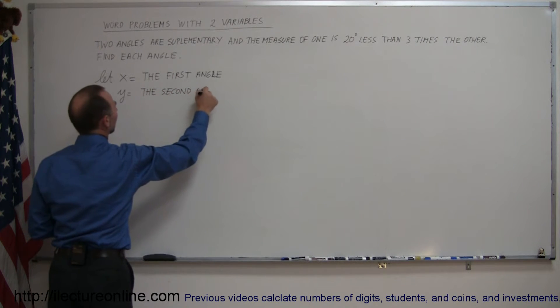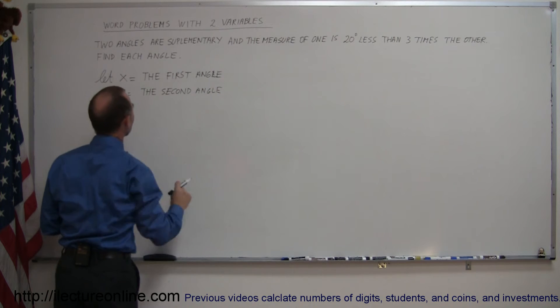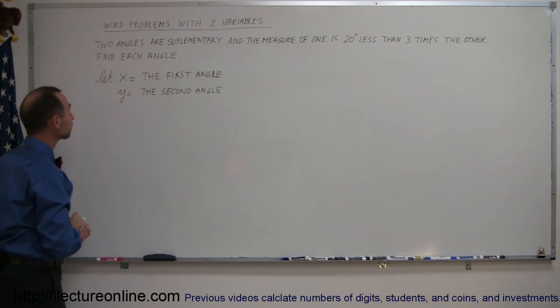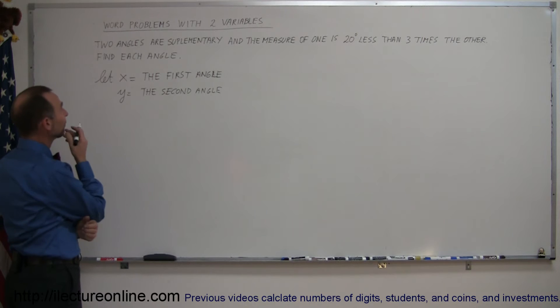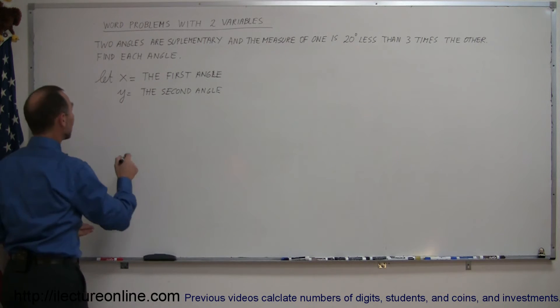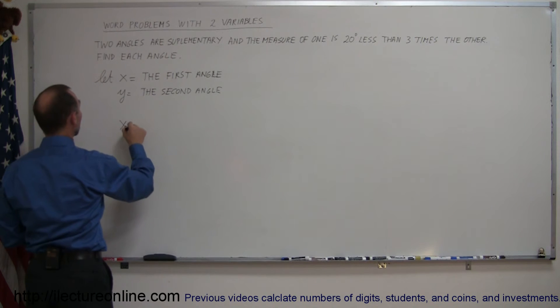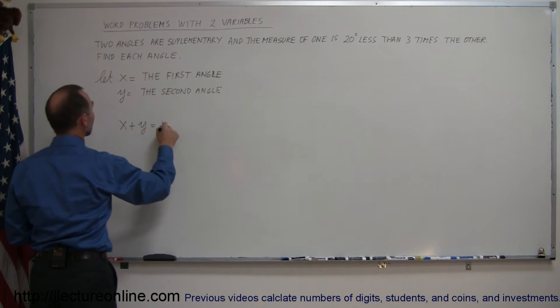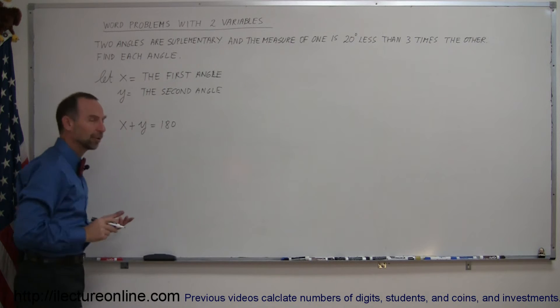You may say, well, why do I even bother writing that? Let me tell you, it's a good thing to do that. All right. So, if the two angles are supplementary, that means that they must add up to 180 degrees. That means x plus y equal 180. There's our first equation.